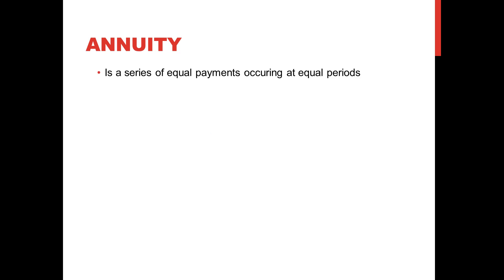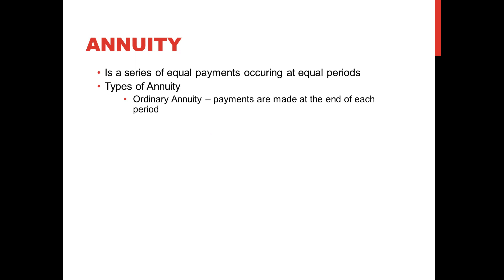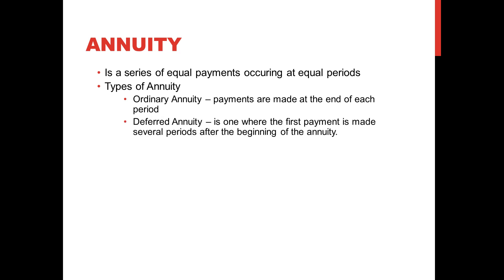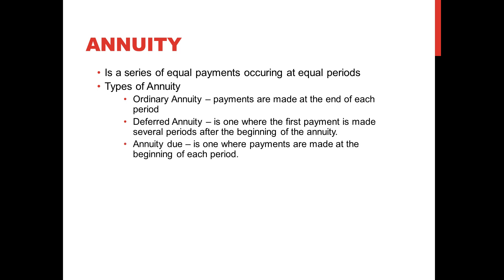Before we do that, let us have the definition. An annuity is a series of equal payments occurring at equal periods. There are types of annuity. First, we have the ordinary annuity, where payments are made at the end of each period. The deferred annuity is one where the first payment is made several periods after the beginning of the annuity — the first payment is not exactly right after a certain present period. And then annuity due is one where payments are made at the beginning of each period.